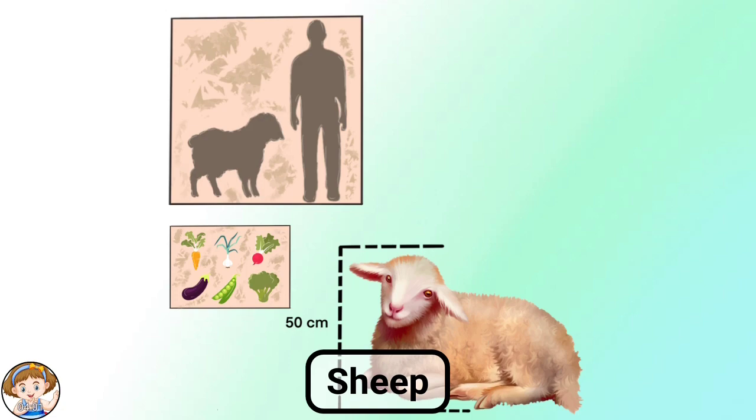Sheep are afraid of large areas. They are more comfortable if, for example, a fence is built around them.